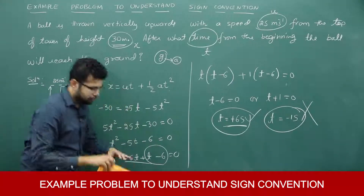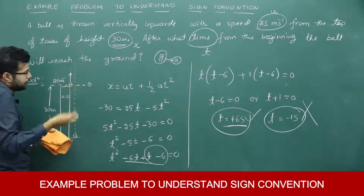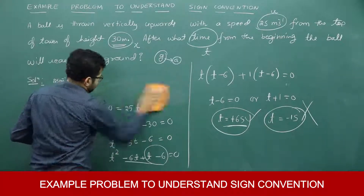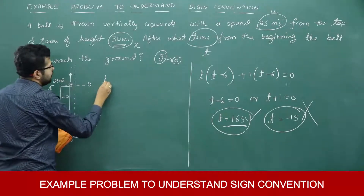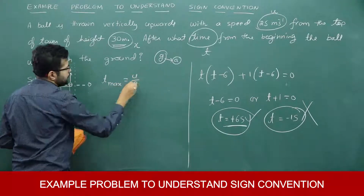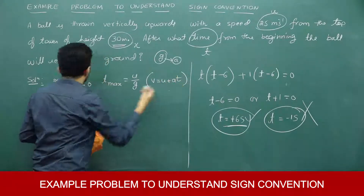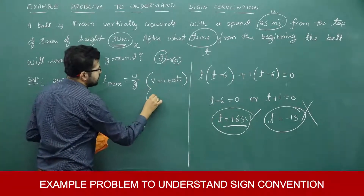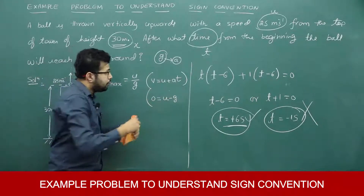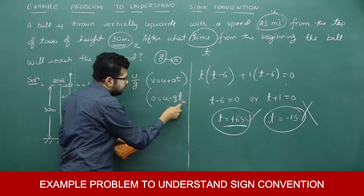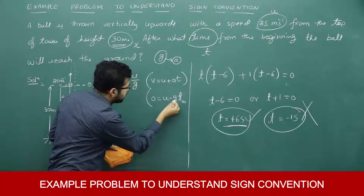One more approach: sometimes you may first calculate the time of flight to maximum height, then the time to reach the ground separately. The time to reach maximum height is T_max = u/g. We derive this using v = u + at: at the highest point velocity is 0, initial velocity is u, and a = −g. Setting v = 0 gives T_max = u/g = 25/10 = 2.5 seconds.